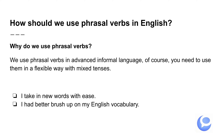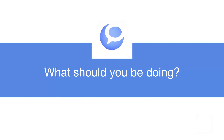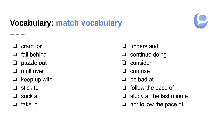You need to use phrasal verbs in a flexible way, using mixed tenses. For example, 'I take in new words with ease' means I understand new words easily. You can use it in the present or the past: 'I used to take in new words with ease.' The next one: 'I had better brush up on my English vocabulary.' Brush up on means to improve — it is more informal and more advanced than the word 'improve'. You simply substitute 'improve' with 'brush up on'.